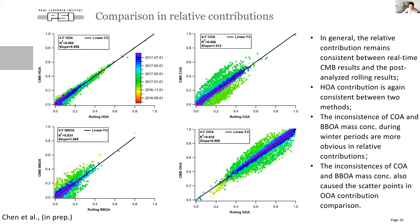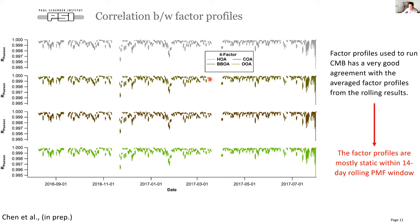We also tested the assumption about the consistency of OA factor profiles between the previous rolling PMF time window and the following data points. We compared the factor profiles used for CMB analysis with those from the post-analyzed rolling results. Overall, all factors show good agreement with OA RPDs larger than 0.995. This comparison further proved that factor profiles are mostly static within the 14-day rolling PMF window, which is well aligned with our initial assumption.